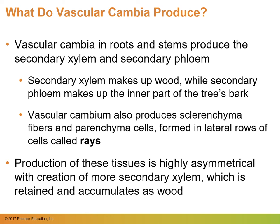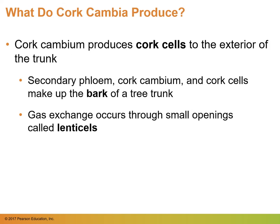The cork cambium produces cork cells to the exterior of the trunk. Secondary phloem, cork cambium, and cork cells are part of what makes up the bark of a tree trunk. Gas exchange also occurs here through small openings called lenticels.